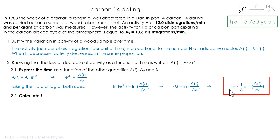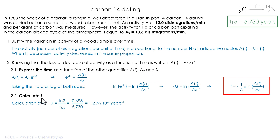Therefore t equals negative one over lambda times the natural log of A(t)/A₀. This correctly answers the question, since t is expressed as a function of A(t), A₀, and the radioactive constant λ. Now for the calculation of lambda: λ = ln(2) / half-life. I will calculate lambda first, then T.